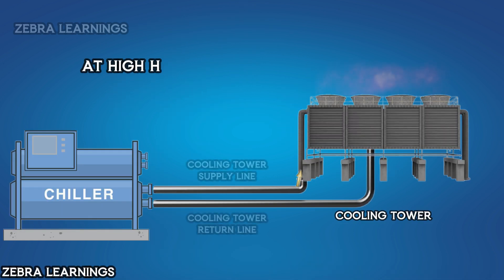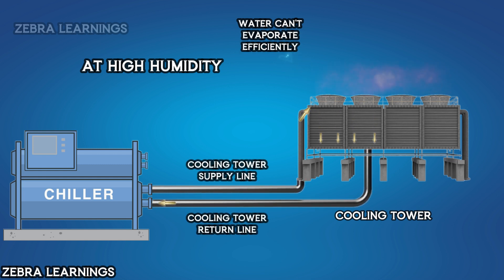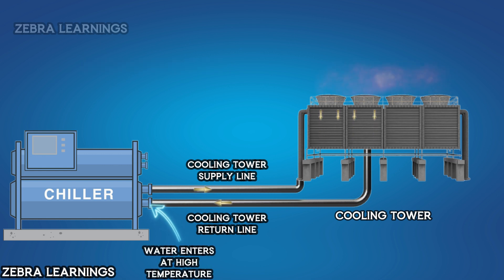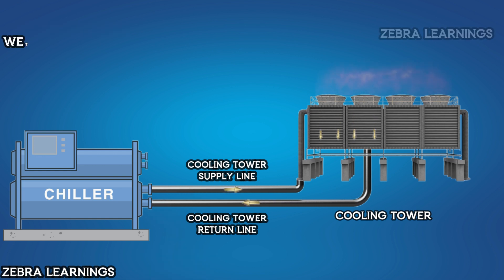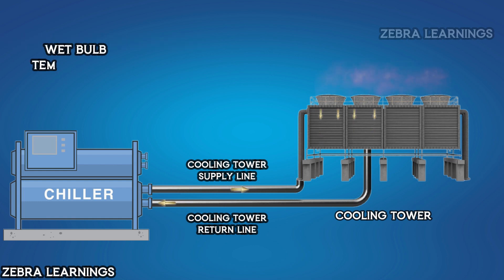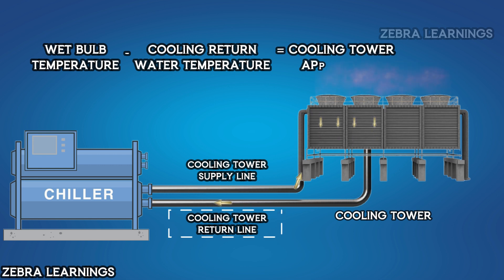However, when the humidity is high, the water cannot evaporate efficiently and the water temperature does not decrease much. As a result, the water returns to the chiller at a higher temperature, which reduces the chiller's efficiency. When the wet bulb temperature exceeds 25°C, the cooling tower's performance starts to decrease. The difference between the wet bulb temperature and the cooling tower's return water temperature is the cooling tower's approach value.